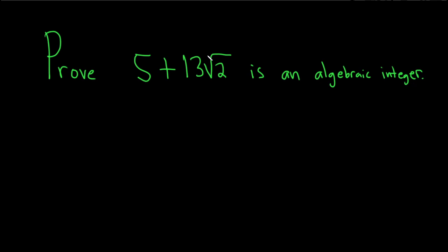Let's prove that 5 plus 13 square root of 2 is an algebraic integer. So an algebraic integer is just an algebraic number, except that the polynomial for which it is a root of is a monic polynomial.